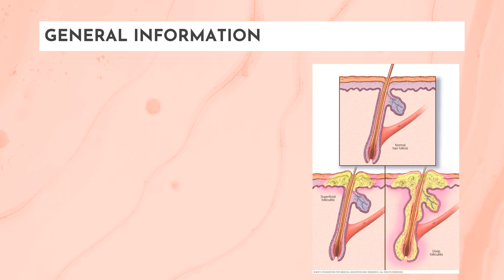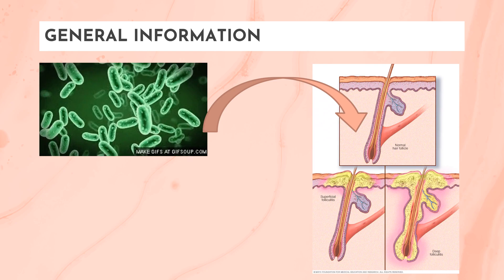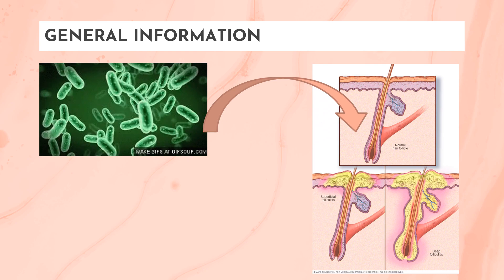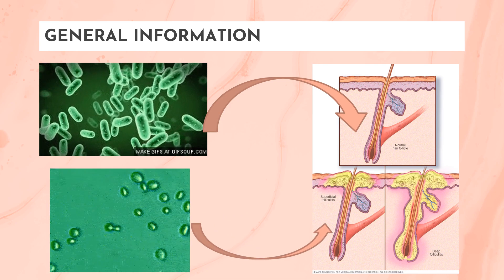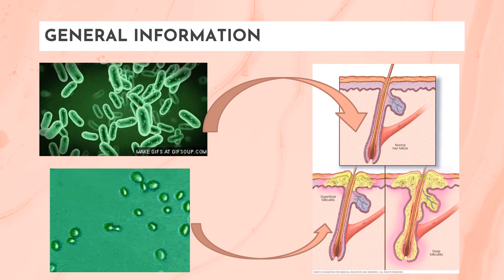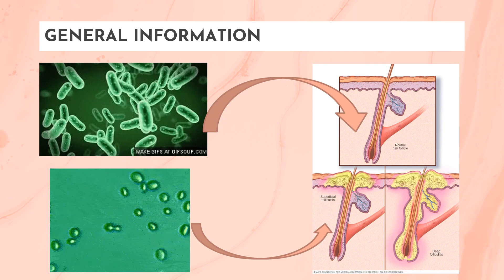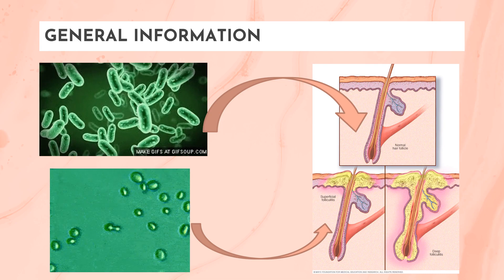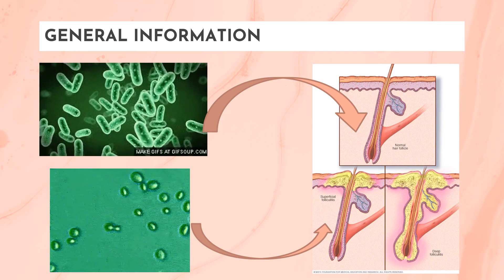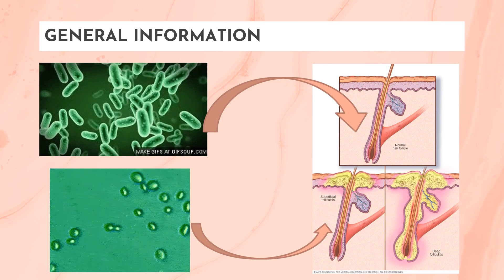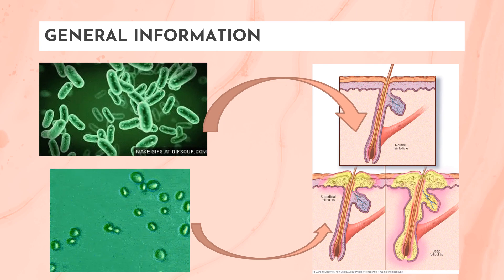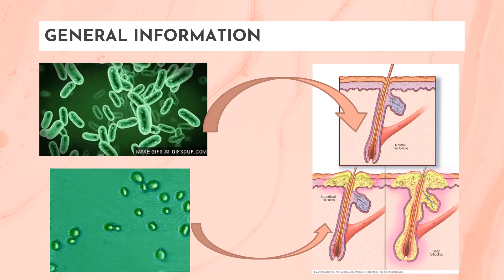When hair follicles are damaged, they may be invaded by viruses, bacteria, and fungi, leading to infections such as folliculitis. Superficial folliculitis affects the upper part of the hair and the skin directly next to the follicle. Deep folliculitis affects the deeper portion of the follicle and can involve the entire hair follicle.